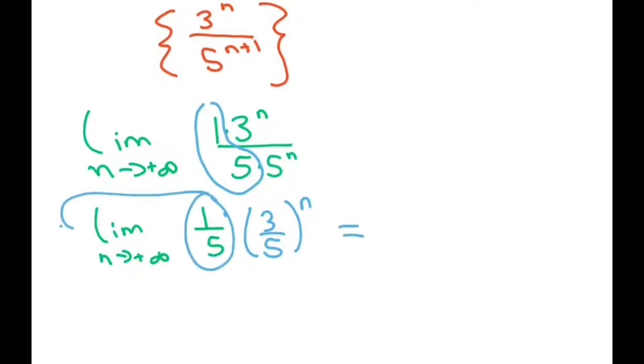And then, using my properties of limits, I can move him in front here, right? This is 1 fifth times the limit as n approaches a big, big number of 3 fifths to the nth power.